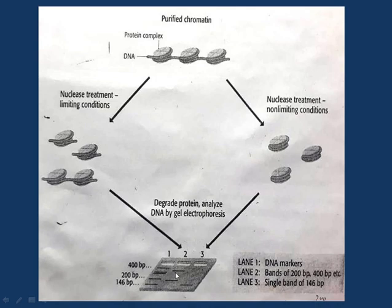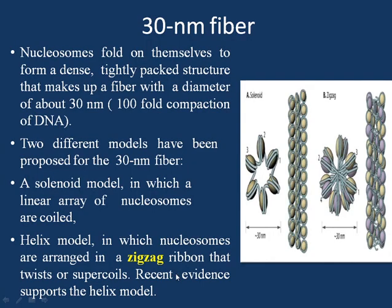Now the 30 nanometer fiber — this is the next level of organization of chromatin to form a chromosome. Once nucleosomes are formed, they have to fold on themselves to form a dense, tightly packed structure that makes up a fiber with a diameter of 30 nanometers. These nucleosomes fold on themselves to form a tightly packed structure which we call the 30 nanometer fiber.